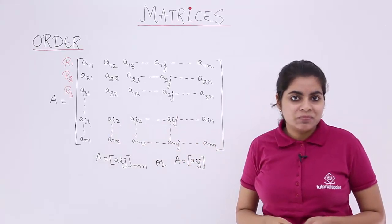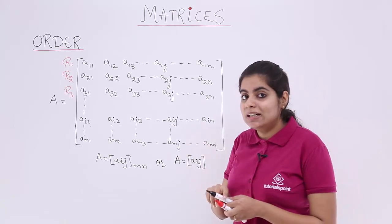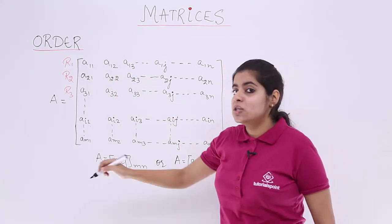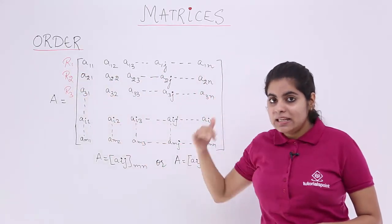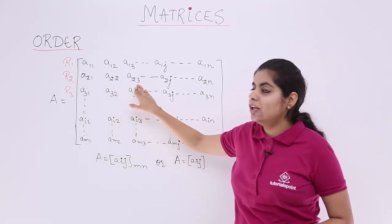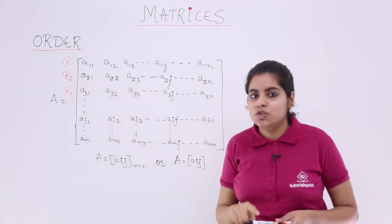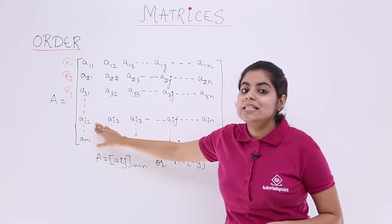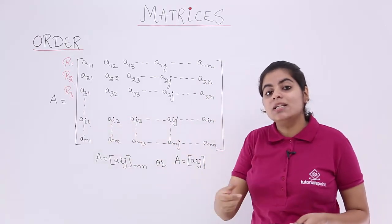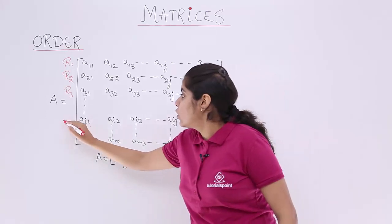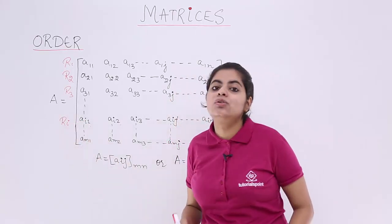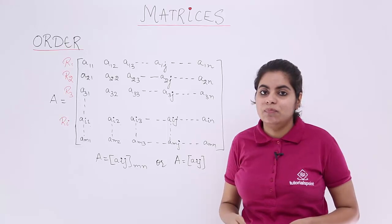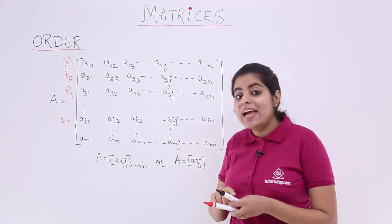Which row is that? You guessed it right! In the first row, a11, a12, a13 — 1 was common, so it was row number 1. In the next row, a21, a22, a23 — 2 was common, so it is row 2. For the general row ai1, ai2, ai3, i is common, so it is the i-th row. The last row am1, am2, am3 — m is common, so it is the m-th row, Rm.